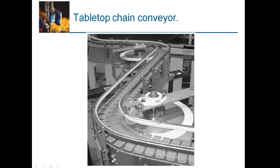Here you can see the tabletop chain conveyor. The mat is driven by the chain attached below, and the product is placed over the mat. The product can be transferred over very long distances very accurately, because there will be no slip — that is another important advantage of the chain conveyor.